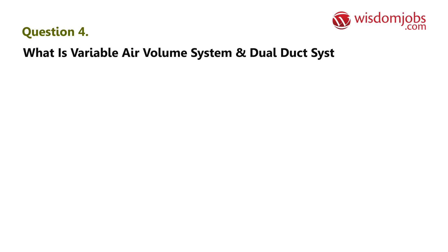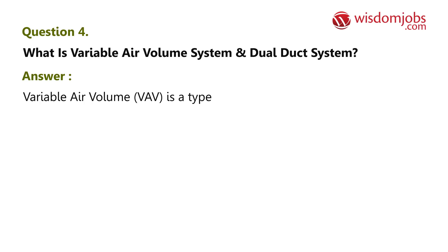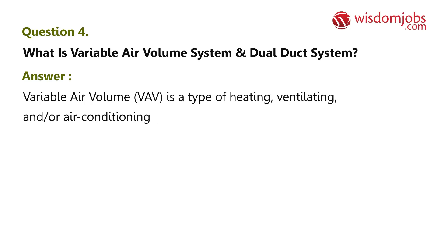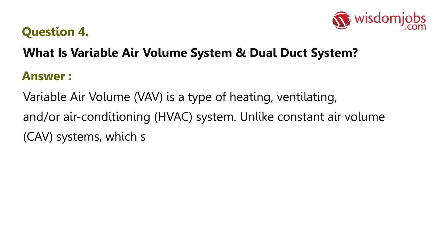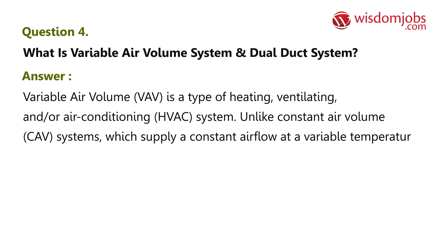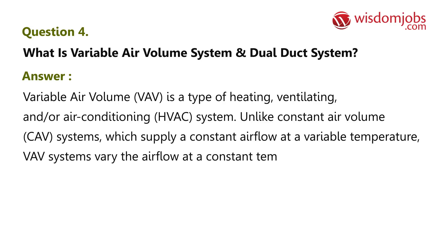Question 4: What is a variable air volume system and dual duct system? Answer: Variable air volume (VAV) is a type of heating, ventilating, and/or air conditioning (HVAC) system. Unlike constant air volume (CAV) systems which supply a constant airflow at a variable temperature, VAV systems vary the airflow at a constant temperature.